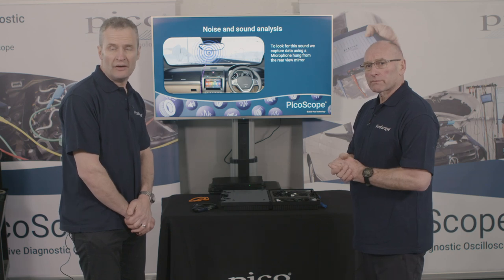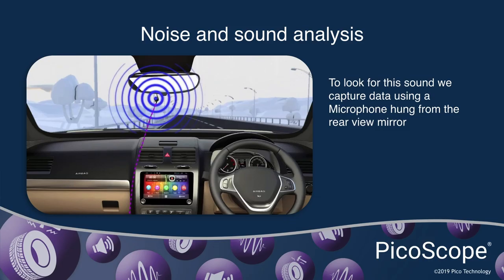So this is where, if it's a complaint of noise, we should include the microphone. We can still use the accelerometer, but let's add the microphone and place that in the cabin — ideally next to the driver's ear if they are the one complaining of the noise, or maybe the rear view mirror, because that will give us an overview of all the noise present in the cabin during the road test.